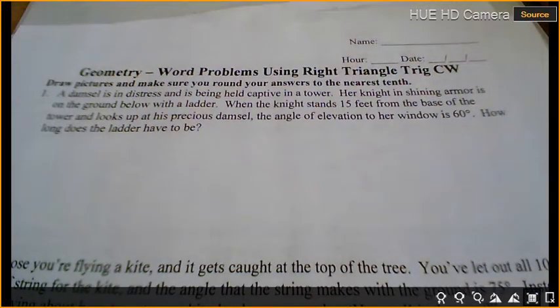Alright, we're looking at word problems using right triangle trig classwork. A damsel in distress is being held captive at a tower. Her knight in shining armor is on the ground below with a ladder. When the knight stands 15 feet from the base of the tower and looks up at his precious damsel, the angle of elevation to the window is 60 degrees. How long does the ladder have to be?